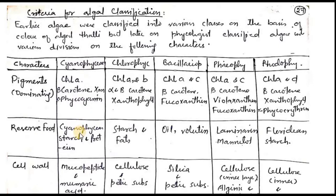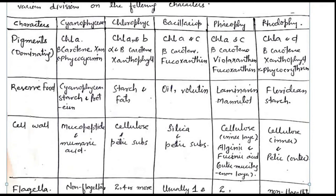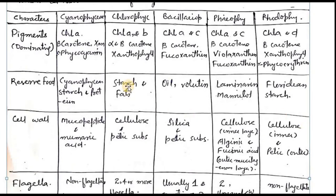On the basis of reserve food: Cyanophyceae have starch and protein. In Chlorophyceae, we have starch and fats. What is polyphosphate? In Bacillariophyceae, we have laminarin and mannitol present in Phaeophyceae. And floridean starch is present in Rhodophyceae. So if you report laminarin and mannitol in a new algae, you can say that algae is brown algae.